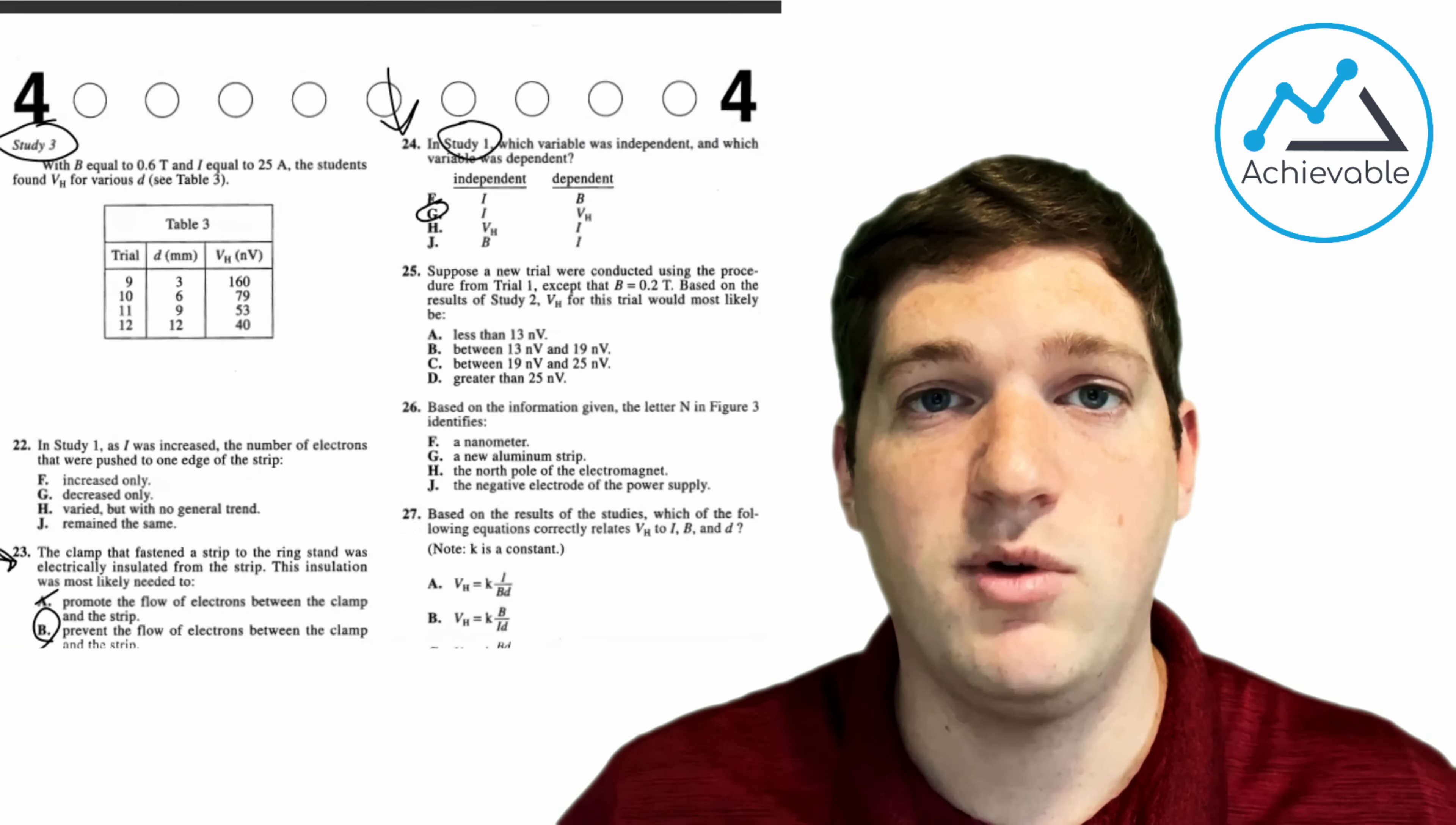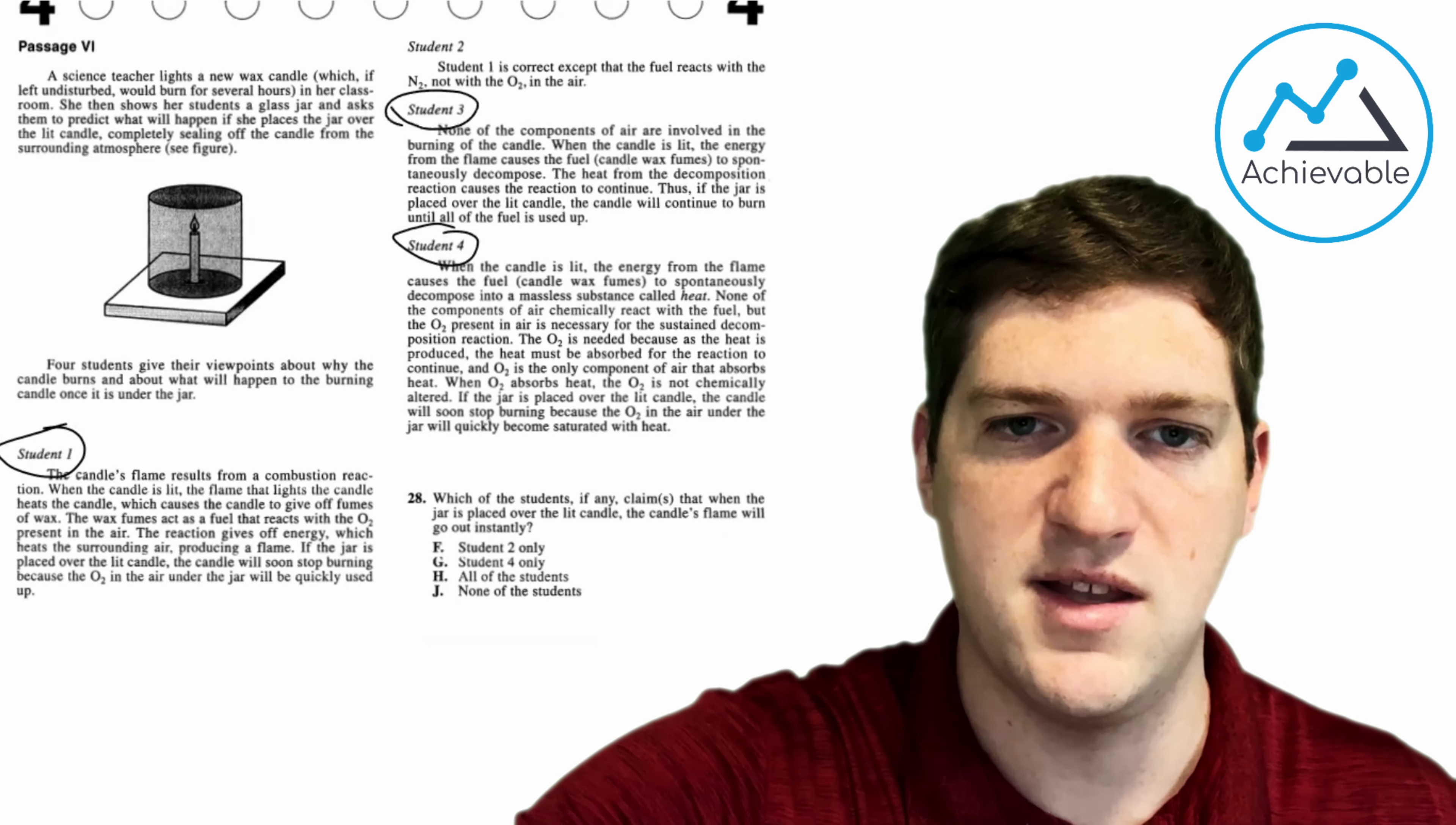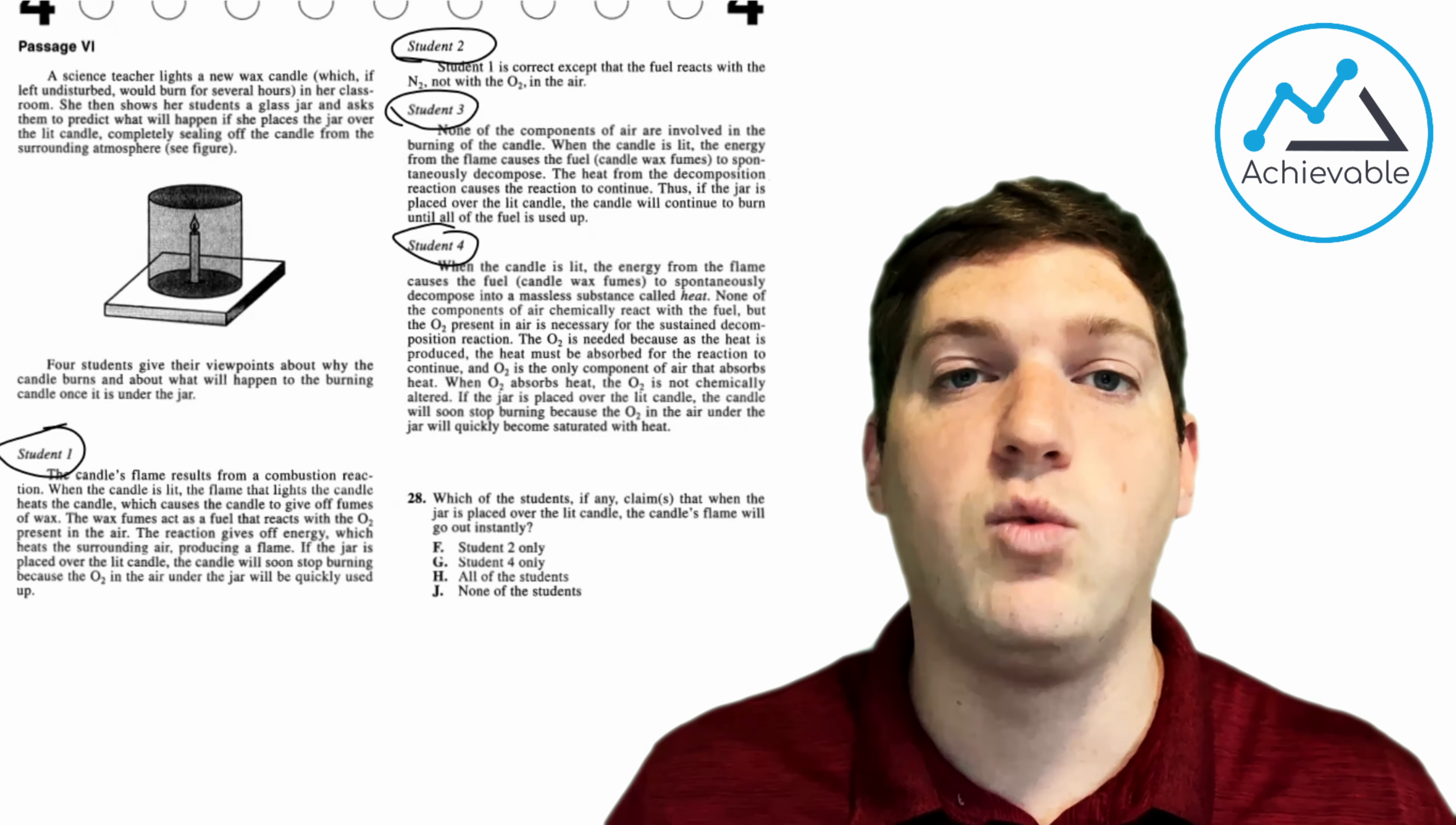So let's go on now to the final passage, which is an example of our final passage format, conflicting viewpoints. There should only be one of these per exam, and again, you can identify it by looking for italic subheadings that say students, or scientists, or hypotheses, something like that. I'll summarize this passage for you so we can move on to other things. But this passage, essentially, they're burning a candle, they put a jar over it. After a while, the candle, of course, extinguishes, and they're trying to explain why that happens.